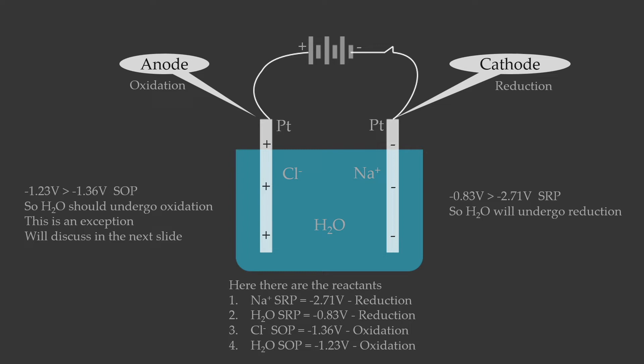The reaction at the anode is: 2Cl⁻ → Cl₂ + 2e⁻. At the cathode, two moles of water gain two moles of electrons and produce hydrogen gas and hydroxide ions: 2H₂O + 2e⁻ → H₂ + 2OH⁻. The solution around the cathode will become rich in hydroxide ions, making the solution basic and raising the pH. The cathode also produces hydrogen gas, and the anode produces chlorine gas.